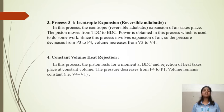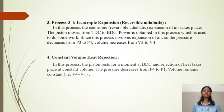The third process is 3 to 4: isentropic expansion, meaning reversible adiabatic. In this process, isentropic expansion of air takes place; the piston moves from TDC to BDC and power is obtained. Since the process involves expansion of air, pressure decreases from P3 to P4 and volume increases from V3 to V4. The fourth process is constant volume heat rejection — the piston moves from BDC and heat rejection takes place at constant volume; pressure decreases from P4 to P1 and volume remains constant, meaning V4 equals V1.